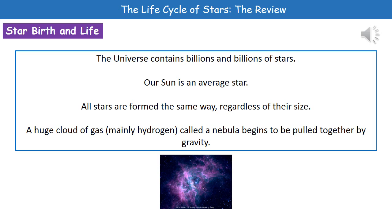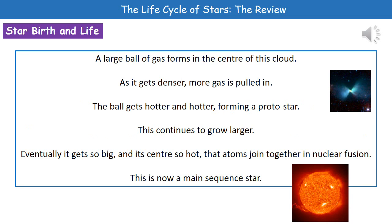What we actually start off with is this huge cloud of gas, which is mainly hydrogen, and this is called a nebula. What happens initially is that this huge cloud of gas is pulled together by gravity. A large ball of gas forms in the center of this cloud, and as that gets denser it pulls more gas in. The ball gets hotter and hotter until it forms this thing called a protostar.